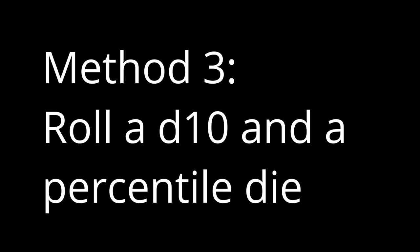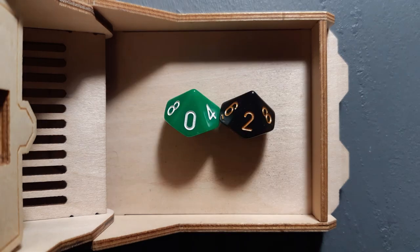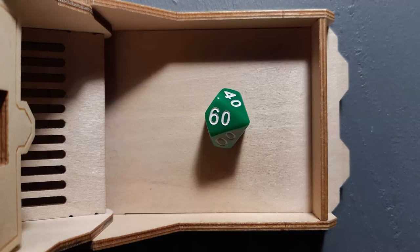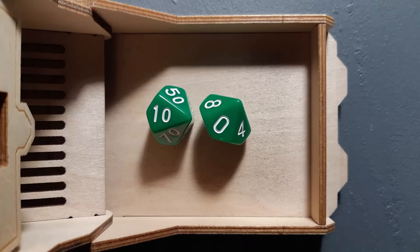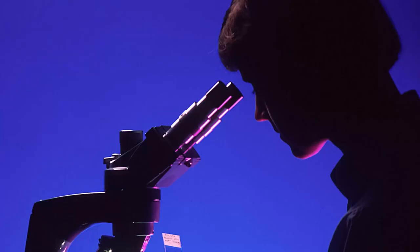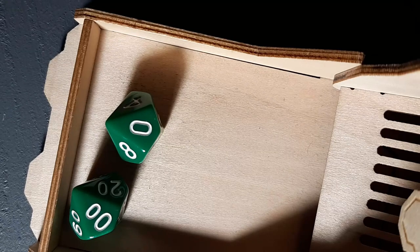Percentile die and d10: you can buy a special percentile die from your local game store. Instead of single digits, it's got double digits on it — it's exactly like using a different color die as your 10's die, except it just has more numbers. Roll both dice and combine the percentile die with the d10 result. For example, a roll of 30 and 3 gives you 33. A roll of 00 and 4 gives you 4. A roll of 10 and 0 gives you 10 — it looks like 100, but it's one 10 with zero 1's. To get 100, roll 00 on the percentile die and 0 on the d10.